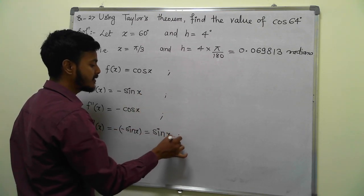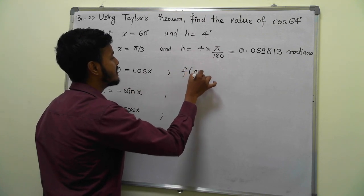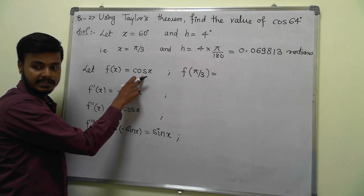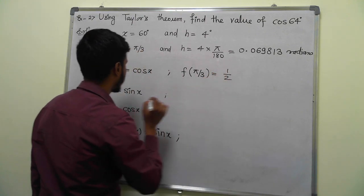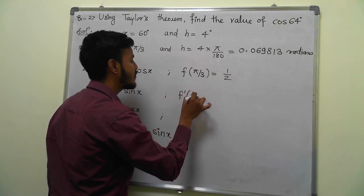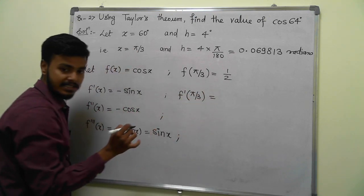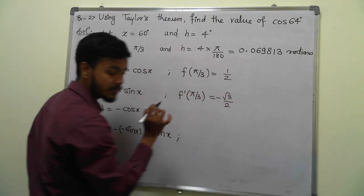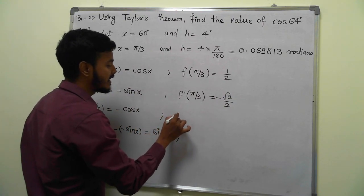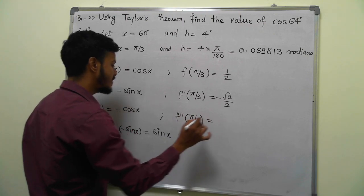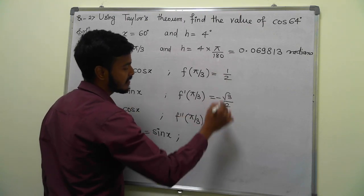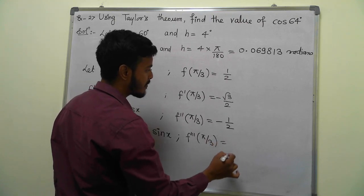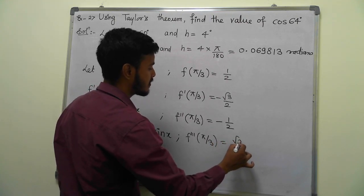Now find f(π/3) = cos(π/3) = cos(60°) = 1/2. Then f'(π/3) = −sin(π/3) = −√3/2. Then f''(π/3) = −cos(π/3) = −1/2. And f'''(π/3) = sin(π/3) = √3/2.